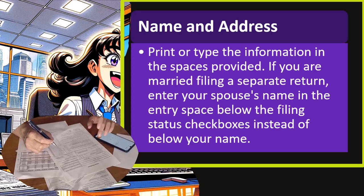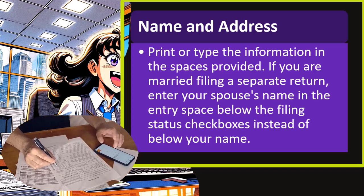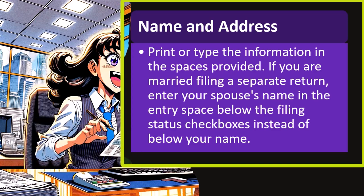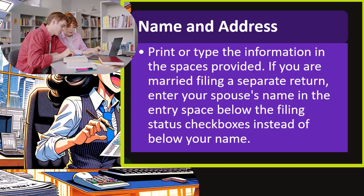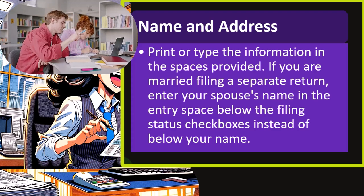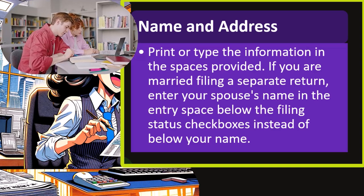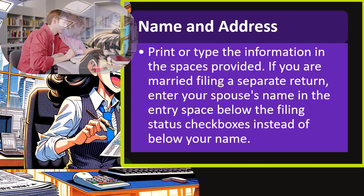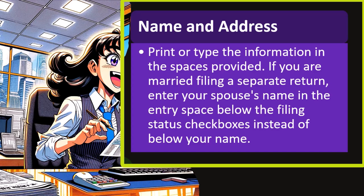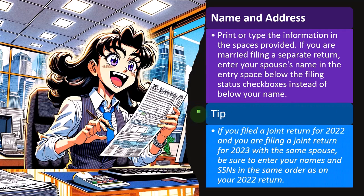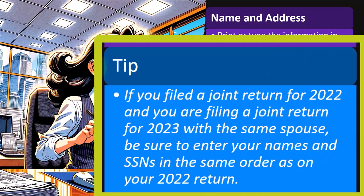If we're single, there's just one individual, so we wouldn't put anything in the spouse's line. If we're married, we can choose married filing jointly — the preferred status — or married filing separately. If we choose married filing separately, we list our own name as the primary taxpayer but still include the spouse's name, since the IRS expects the spouse to also file a return so it can mirror what's happening on both sides.